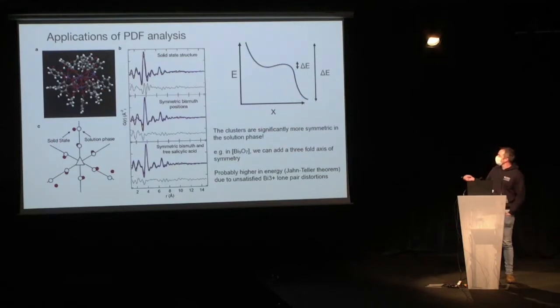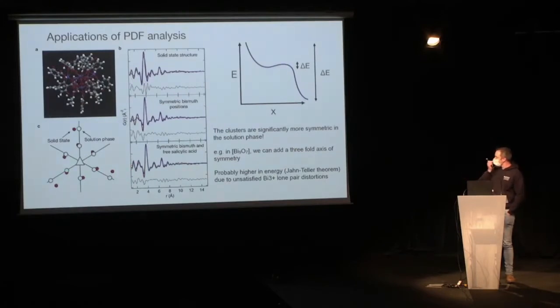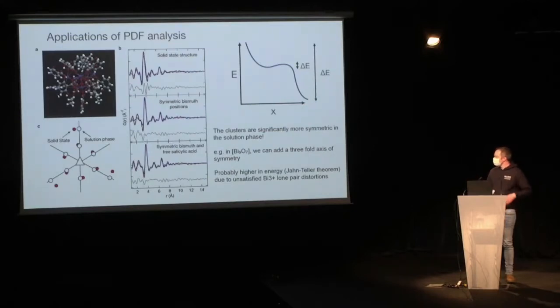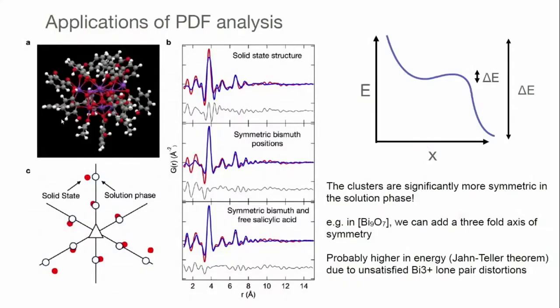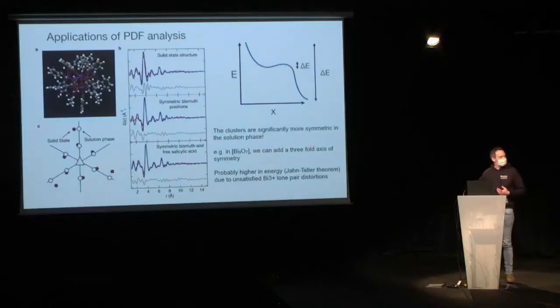A big part of what we've been doing is writing software to refine models against this extra scattering data and using principles of symmetry analysis to refine them. For example, the Bi9O7 cluster which appears here actually turns out to be much more symmetric in the solution phase than it is in the solid state. You can add a threefold axis of symmetry — taking the known solid state structure gives a very bad fit, but making the bismuth position symmetric, adding symmetry and the capping ligands, gives a good fit. We think this is due to the fact that in the solution phase these things have a very isotropic interaction potential around them, so they're prone to distort by what's called the second-order Jahn-Teller / lone pair effect, but that appears to be absent in the solution phase.